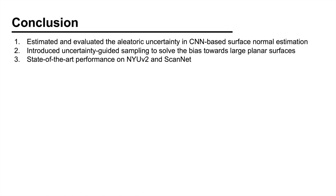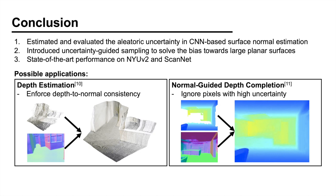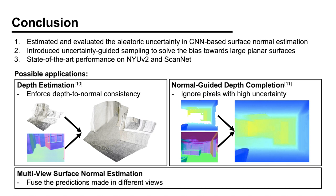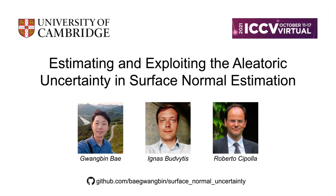We believe that surface normal uncertainty can be useful in a variety of computer vision tasks. Firstly, we can use it to improve depth estimation by enforcing the depth-to-normal consistency for the pixels with low uncertainty. Secondly, we can improve the robustness of surface normal guided depth completion by ignoring the pixels with high uncertainty. Lastly, since our method estimates the surface normal probability distribution, we can fuse the predictions made in different views. We hope you enjoyed the presentation. Here are the references, and thank you very much for watching.